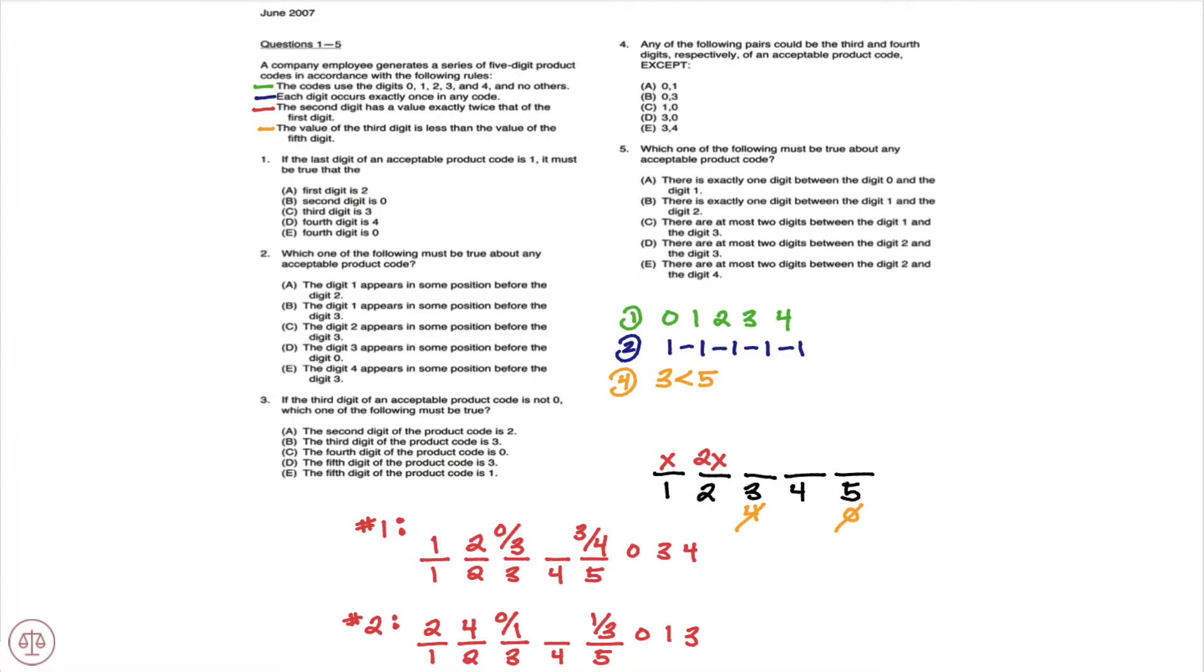Moving to question 1, if the last digit of an acceptable product code is 1, it must be true that.